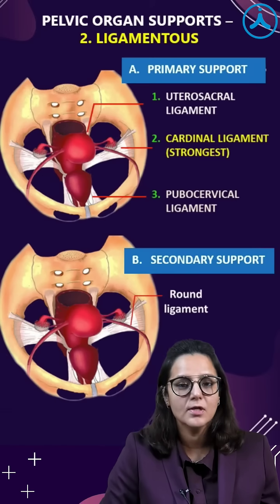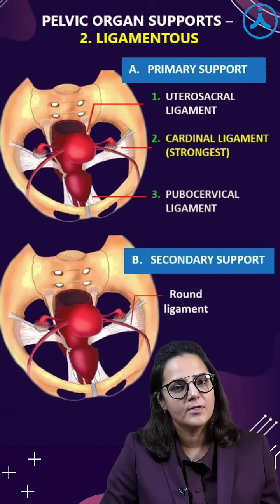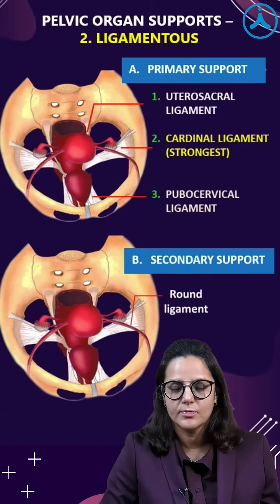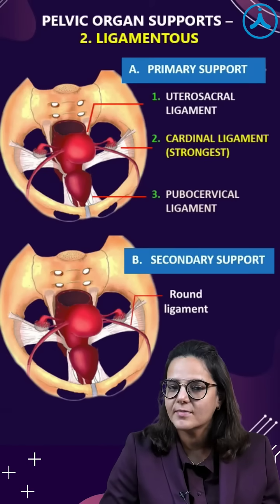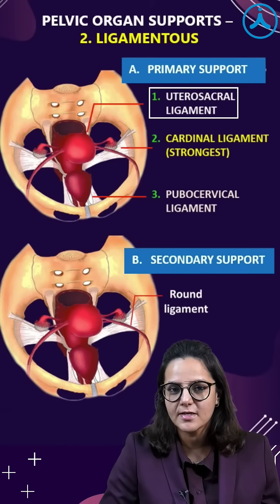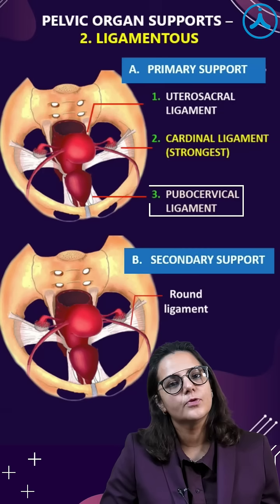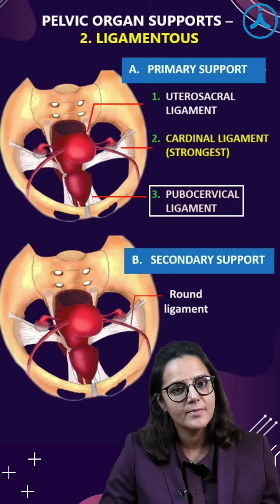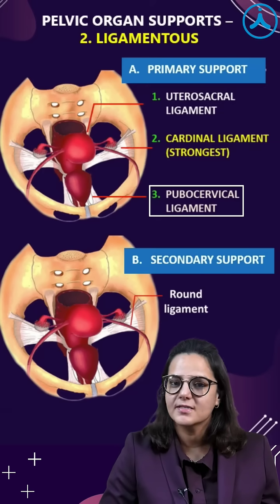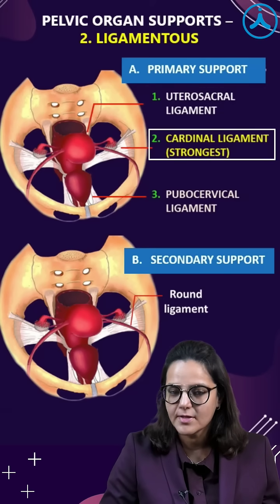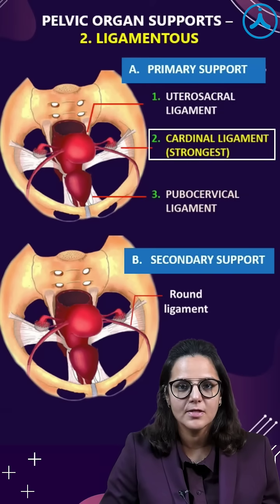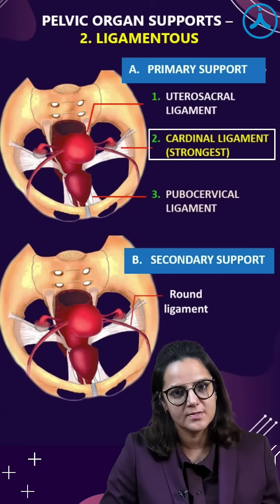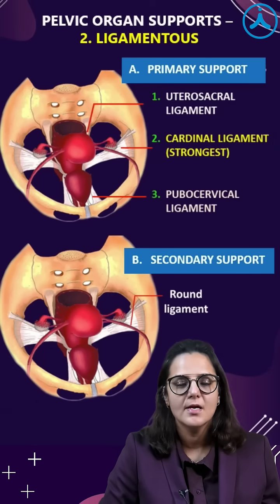The ligamentous support can be primary or secondary. In primary support, we have three main ligaments: the utero-sacral ligament, the pubocervical ligament, and the strongest ligament — the cardinal ligament, also known as McEnross ligament or the transverse cervical ligament.